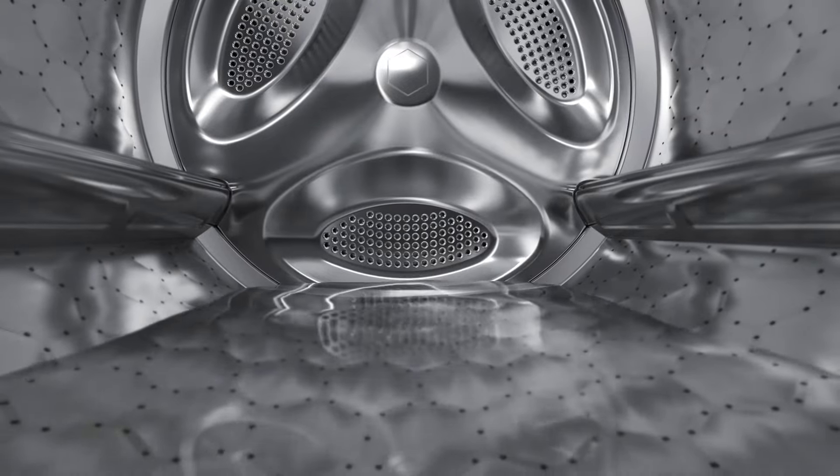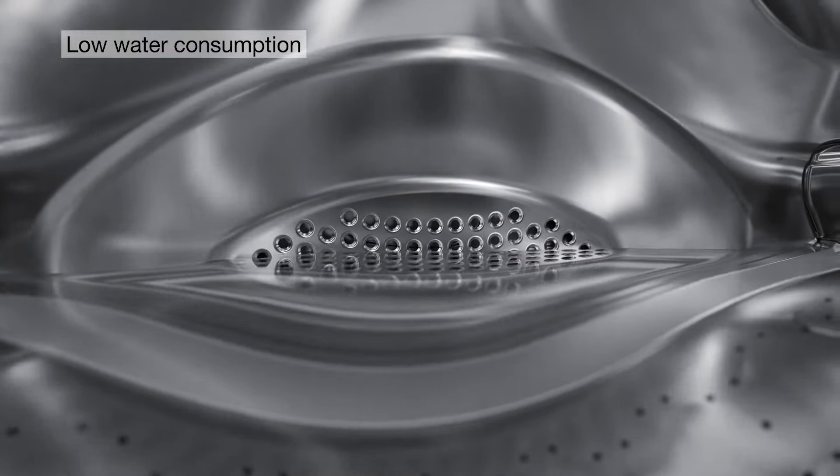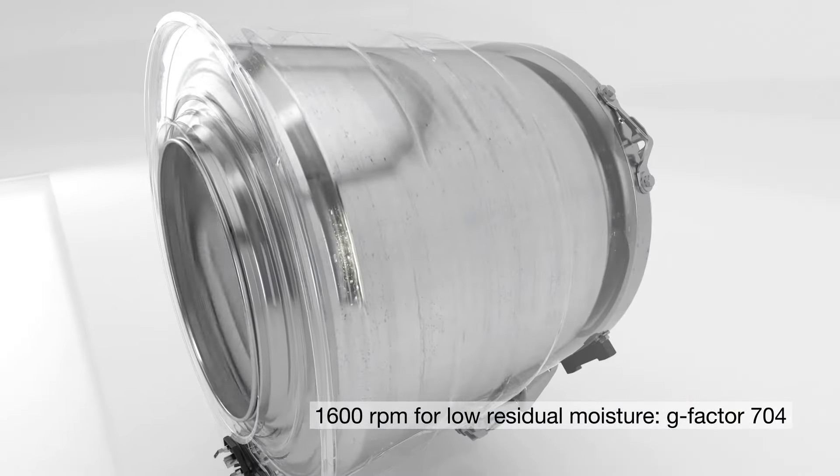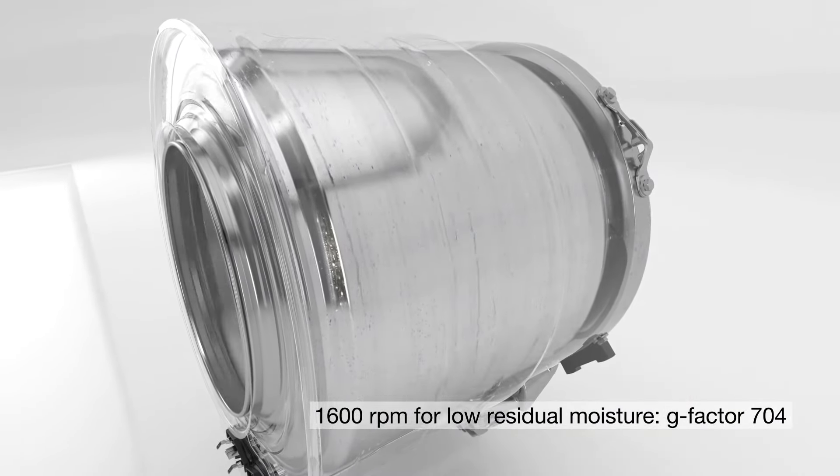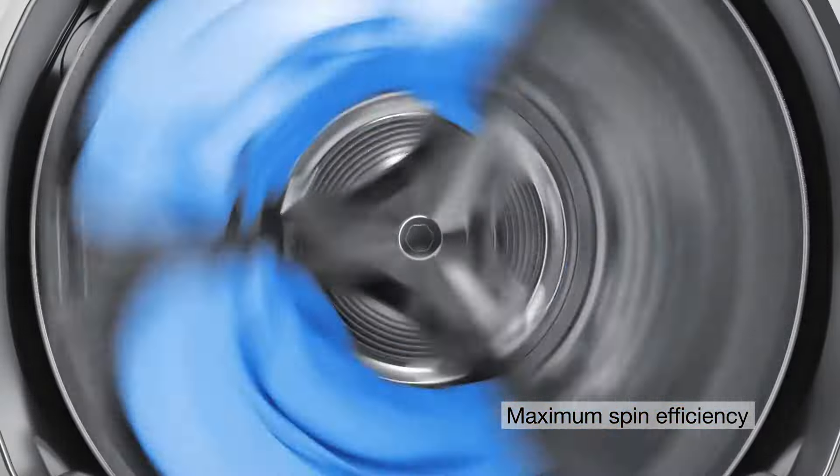Miele machines are economical. In addition to using less water and energy, Miele washing machine's high G-forces result in lower residual moisture levels, which significantly reduces drying time and associated costs. It's substantially cheaper to spin dry than it is to electric dry.